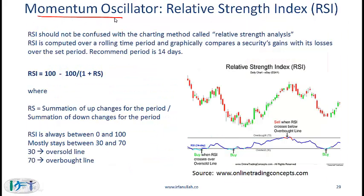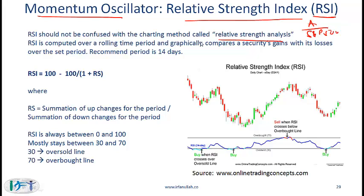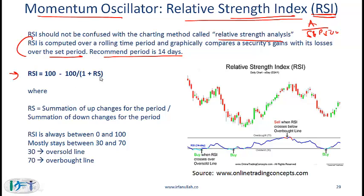The second momentum oscillator is the Relative Strength Index. The RSI should not be confused with relative strength analysis, where you divide the price of stock A by the S&P 500. The RSI is a momentum indicator computed over a rolling time period — typically 14 days — and graphically compares a security's gains with its losses over that set period.